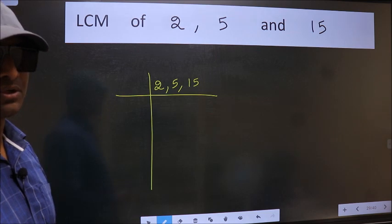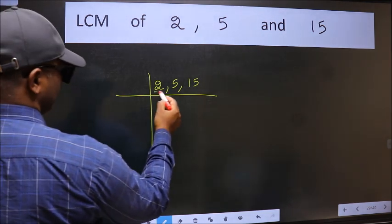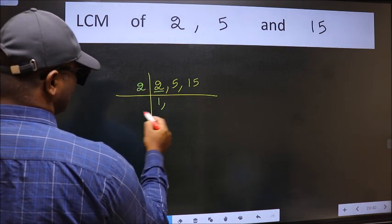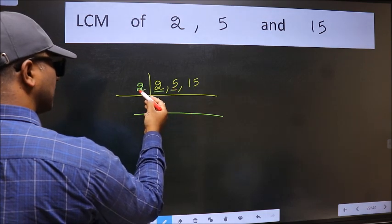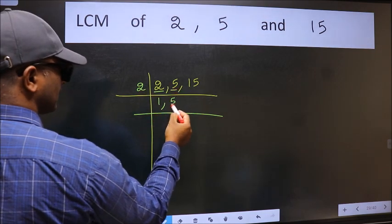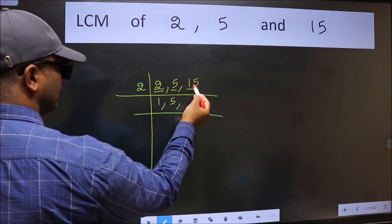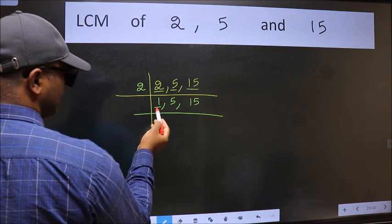Now we should focus on the first number which is 2 here. 2 is a prime number so 2 once 2. The other number 5 not divisible by 2 so you write it down as it is. The other number 15 not divisible by 2 so you write it down as it is. Now we got 1 here.